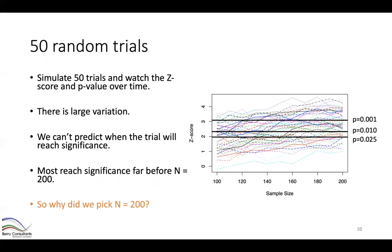Now I'm showing results of 50 randomly simulated clinical trials. Each line in the graph represents one trial. The x-axis is sample size and the y-axis is the standardized test statistic (z-score) — higher values indicating a bigger treatment effect. Three reference lines show corresponding p-values, with the bottom line at p=0.025 being the threshold we need by the end of the trial.